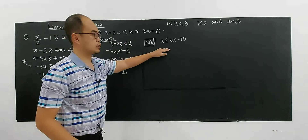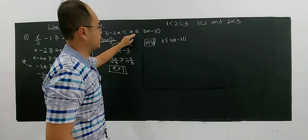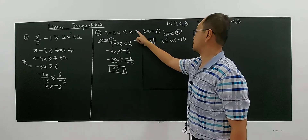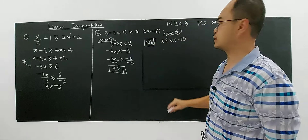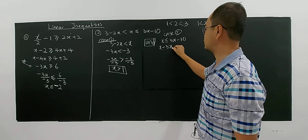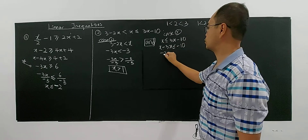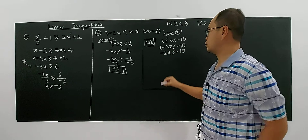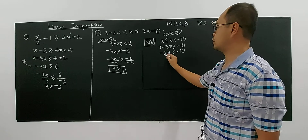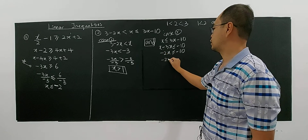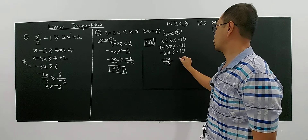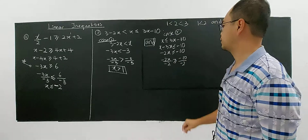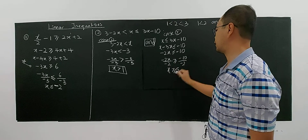This case is conditional because it depends on the second case. Case 2 is x less or equal 3x minus 10. So you have x minus 3x less or equal negative 10, giving negative 2x less or equal negative 10. You divide by negative 2, so you change the sign, and you get x greater or equal 5.